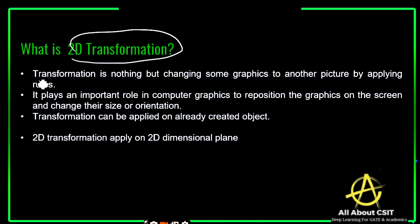Before understanding 2D transformation, let's understand what transformation is. A transformation is nothing but changing an object — if you change that object's shape, color, size, or anything else, that is a transformation. It's like doing a makeover where the real object's shape and everything changes. A transformation means changing some graphics or a picture by applying rules — applying filters, changing the size and orientation.